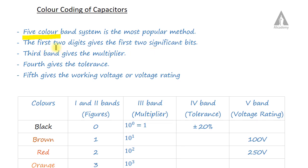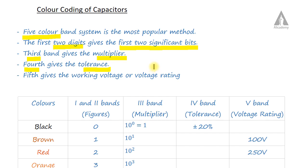The first two bands give the first two significant digits. The third band represents the multiplier. The fourth band represents the tolerance. In capacitors, we have an additional fifth band, which represents the working voltage or voltage rating.